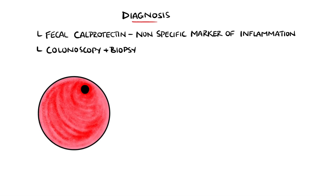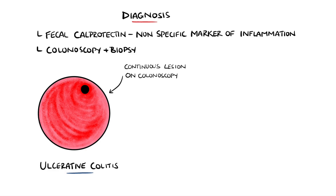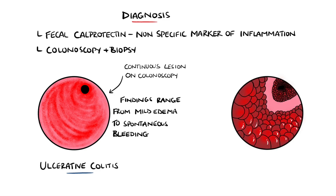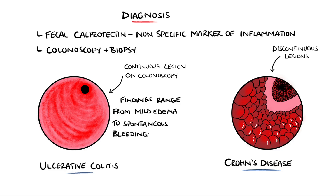The appearance and histology differ between ulcerative colitis and Crohn's disease. In ulcerative colitis on colonoscopy, lesions are seen as continuous and inflammation is only in the mucosal layers, with findings ranging from mild edema to spontaneous bleeding ulcers. Crohn's disease, on the other hand, has discontinuous lesions or ulcerations, usually 4 or 5 centimetres in size, described as a cobblestone pattern, and in contrast to ulcerative colitis, the inflammation in Crohn's disease is transmural.